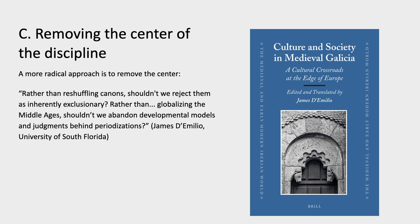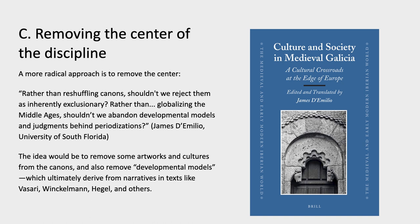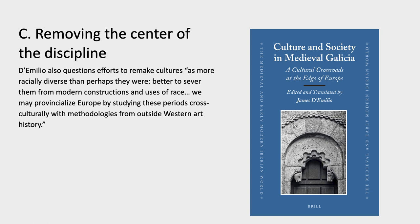A third strategy would be to remove the center completely. James D'Amelio, who teaches at University of South Florida, said in his response: rather than reshuffling canons, shouldn't we reject them as inherently exclusionary? Rather than globalizing the Middle Ages — his specialty — shouldn't we abandon developmental models and judgments behind periodizations? The idea would be to remove artworks and cultures from the canons and syllabi, and also remove developmental models which ultimately derive from narratives in texts like Vasari, Winckelmann, Hegel, and others who are predecessors of contemporary art historical practice. D'Amelio also questions efforts to remake cultures as more racially diverse than perhaps they were, arguing it's better to sever them from modern constructions and uses of race.